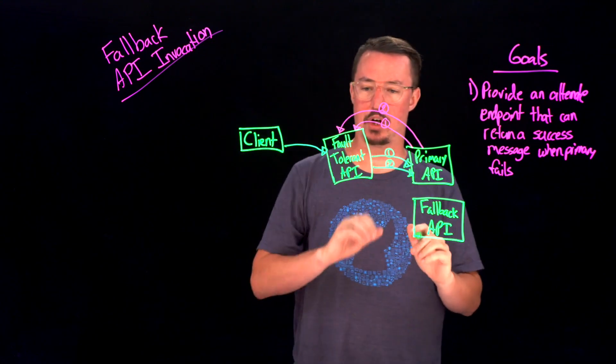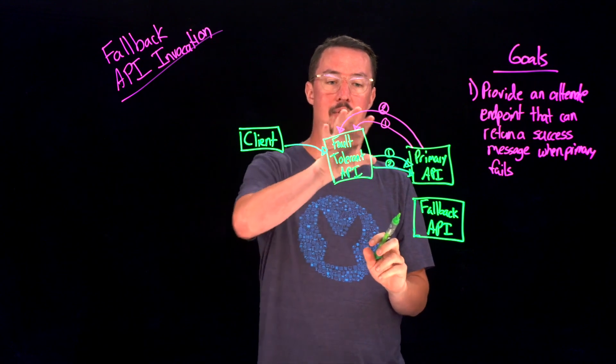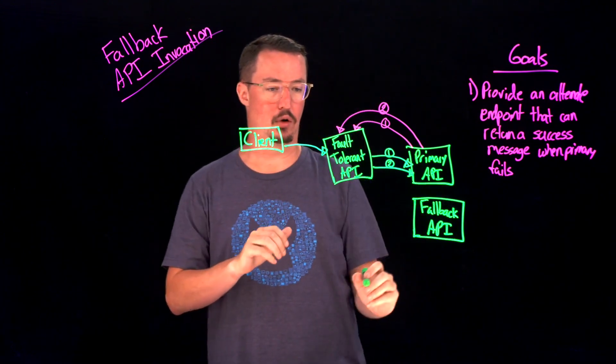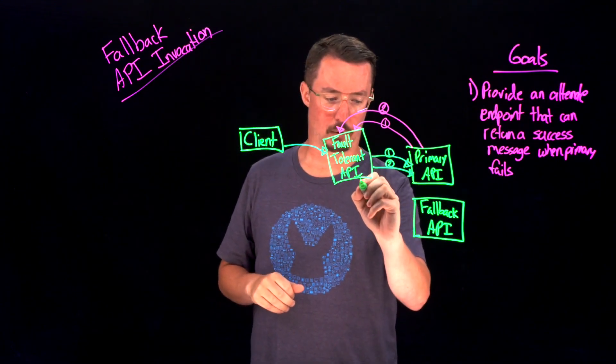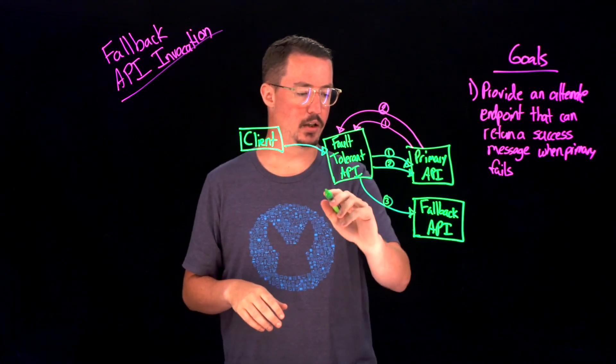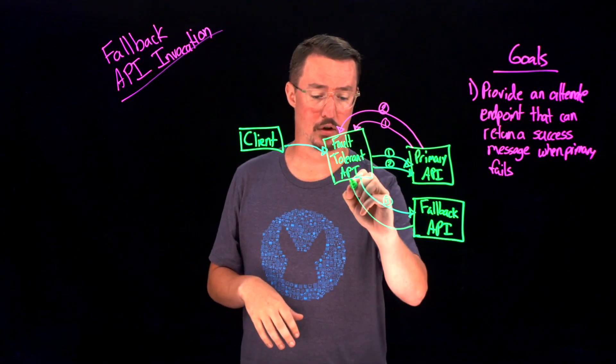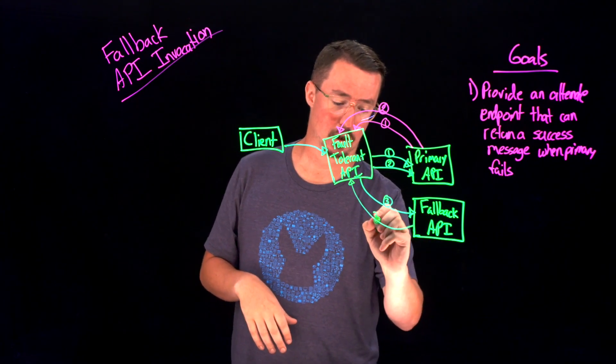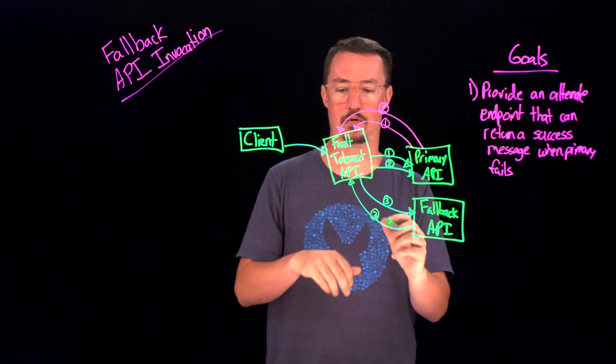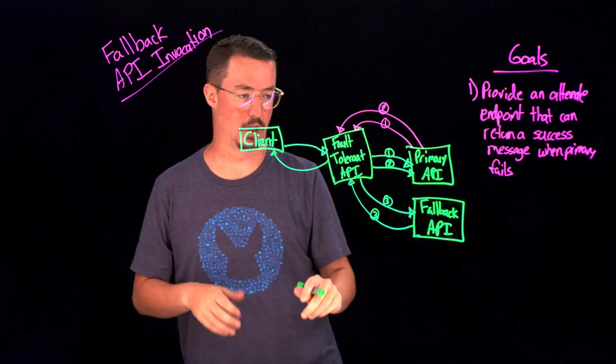Now, the retry strategy over here says, okay, we're only going to retry that two times. And after the second time, we're going to go to our fallback API. So we're going to come down here to our fallback API for a third call. And luckily, this fallback API is actually going to be working. So we're going to return back a success message to the fault-tolerant API, which will then pass the message back to the client.